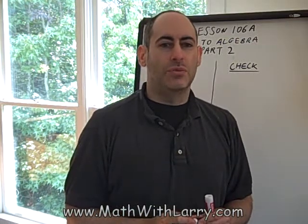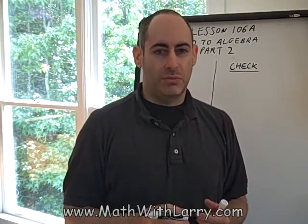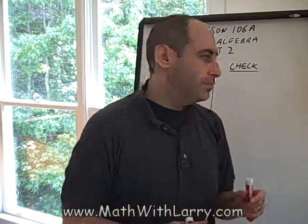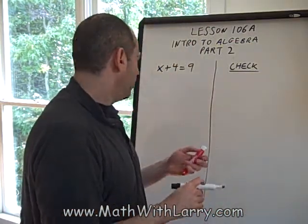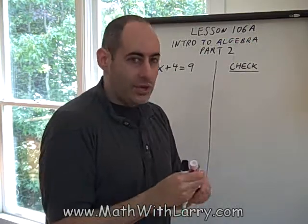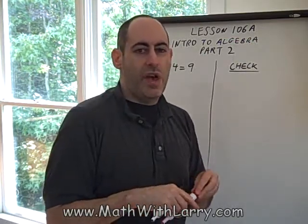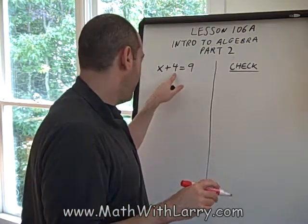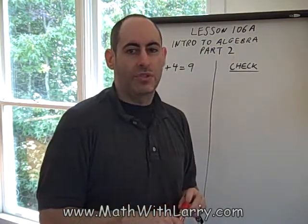In the last lesson, we solved an algebra problem involving subtraction. For this lesson, let's do one involving addition. Let's solve x plus 4 equals 9. Now, recall from the previous lesson that we need to get x by itself. We look to see what's being done to the x, and then we're going to do the opposite to both sides.